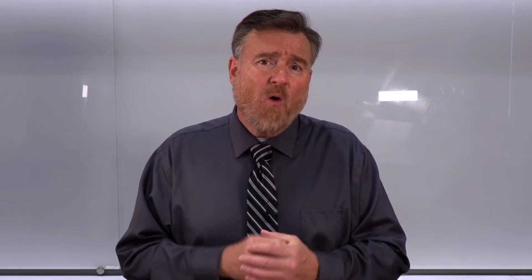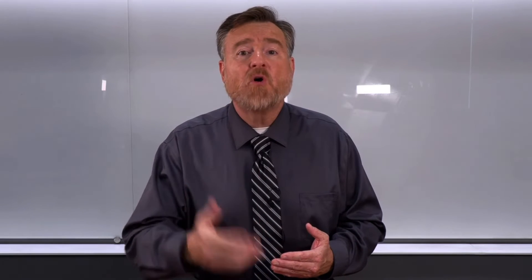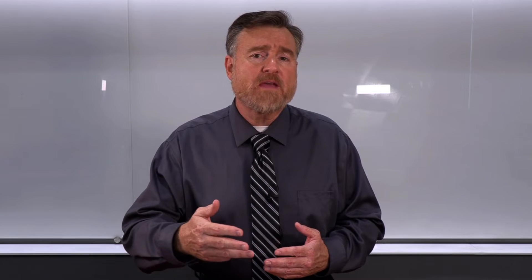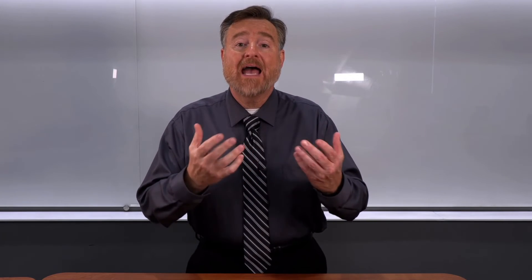We can do something similar with our coefficient of determination. What about the variability that is not explained? That is a measure called the coefficient of alienation — it is 1 minus r-squared. It is the proportion of variance in the y-variable unexplained by variance in the x-variable. This becomes more clear when we're using multiple regression, where we have two or three variables predicting a single y-variable. We have variability accounted for by each of those predictors, and then we have variability that is unexplained in our model — that would be the coefficient of alienation.